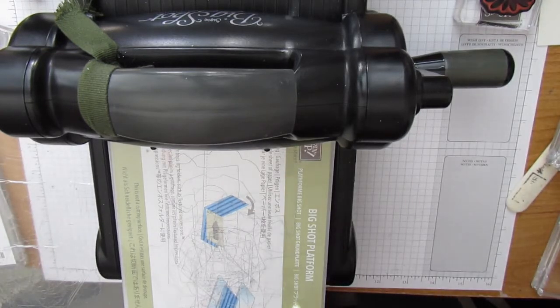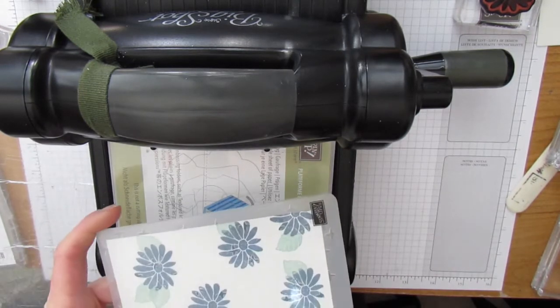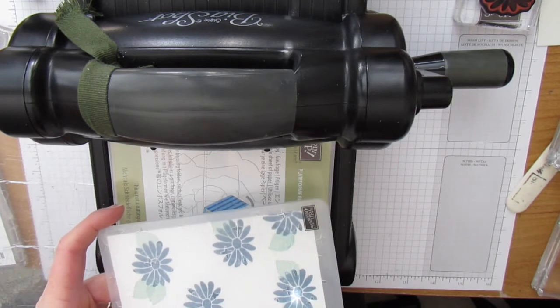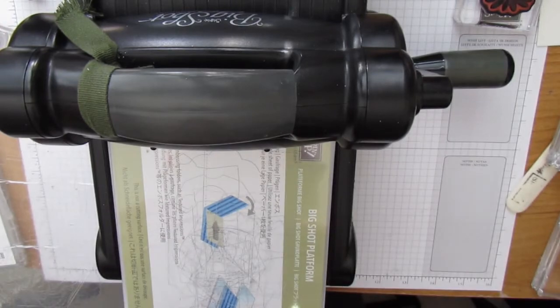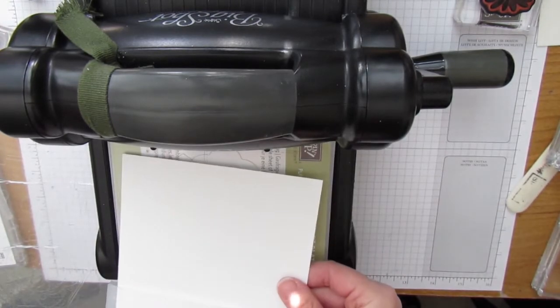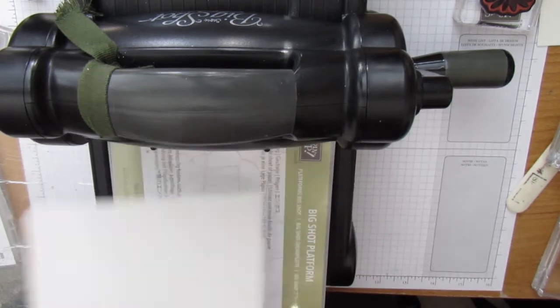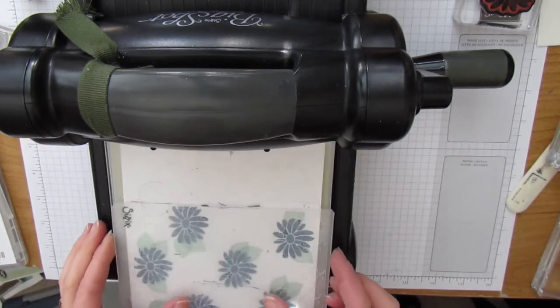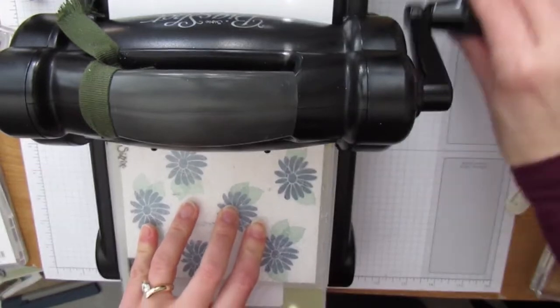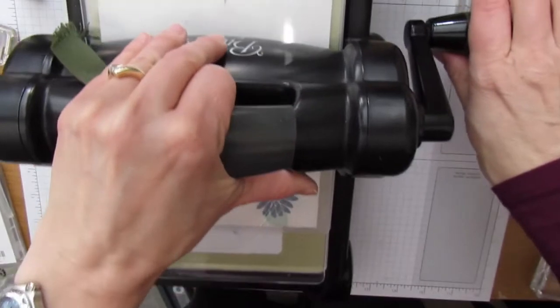I pull out my platform that says embossing on it and I know that's the right one to use. Or if you have an old style, different style Big Shot, you would just flip over tab one. I'm going to place it in my embossing folder like this, making sure that the edge is lined up with the edge of the embossing folder as well. Let's flip it this way. Then I'll put the top plastic plate on.